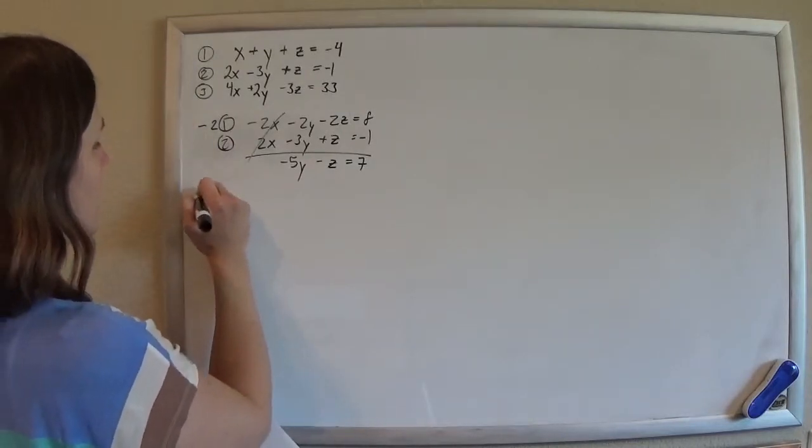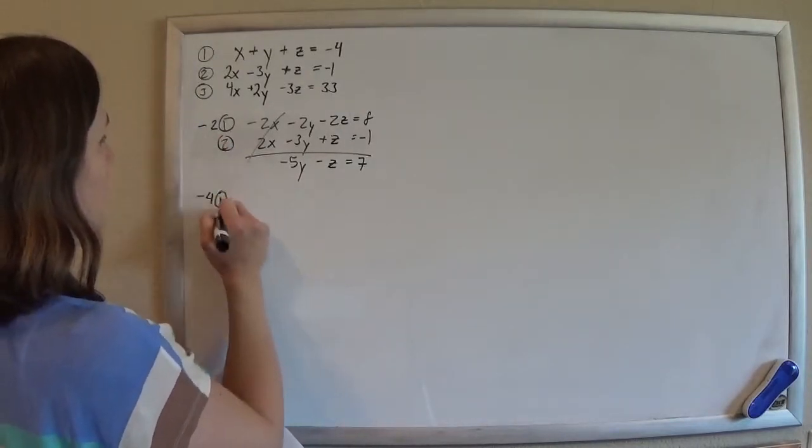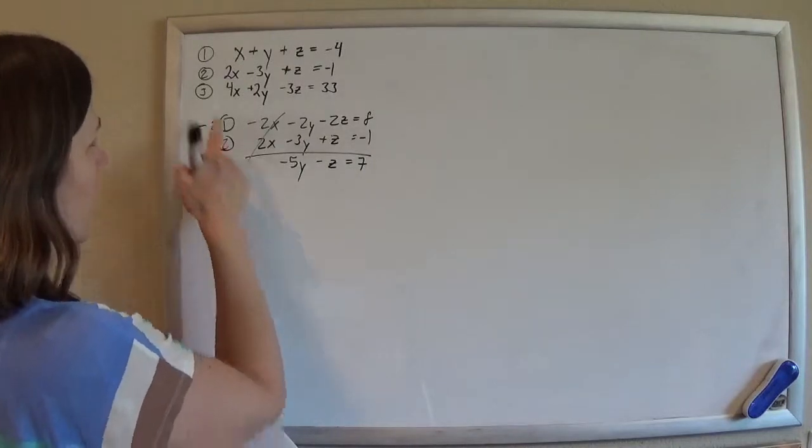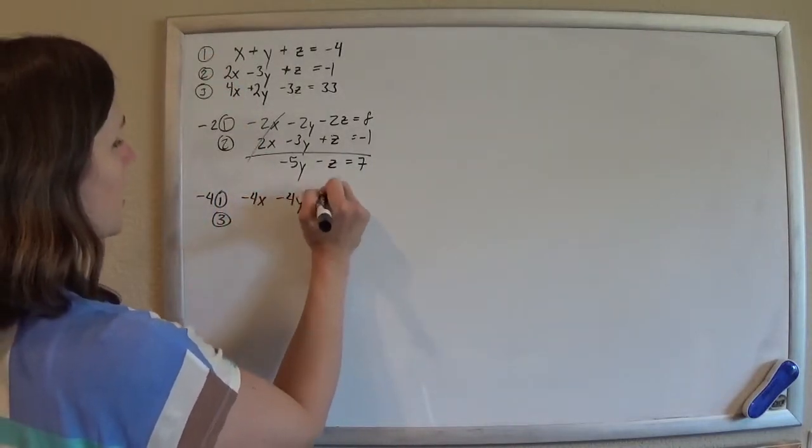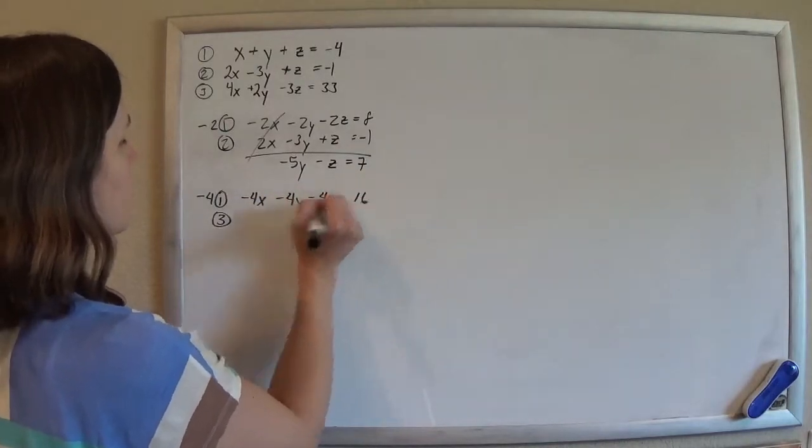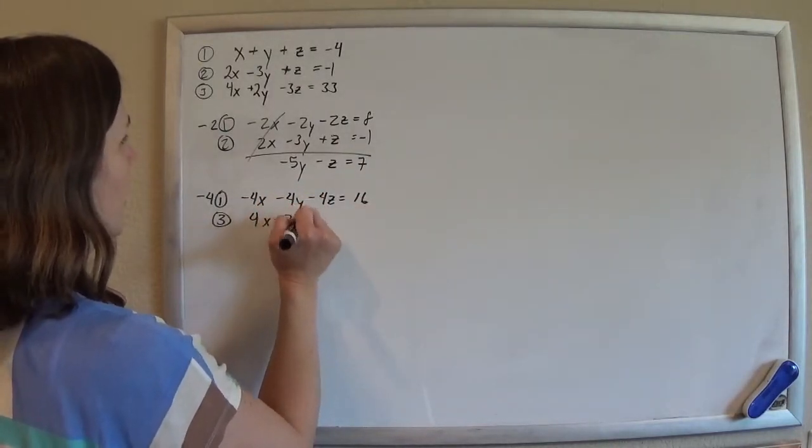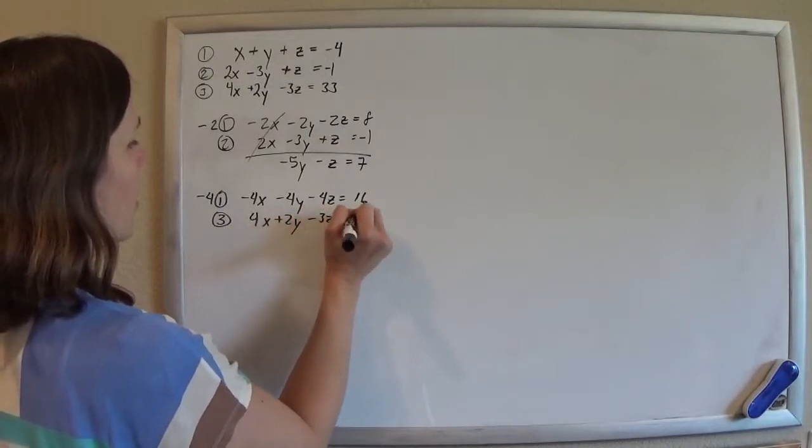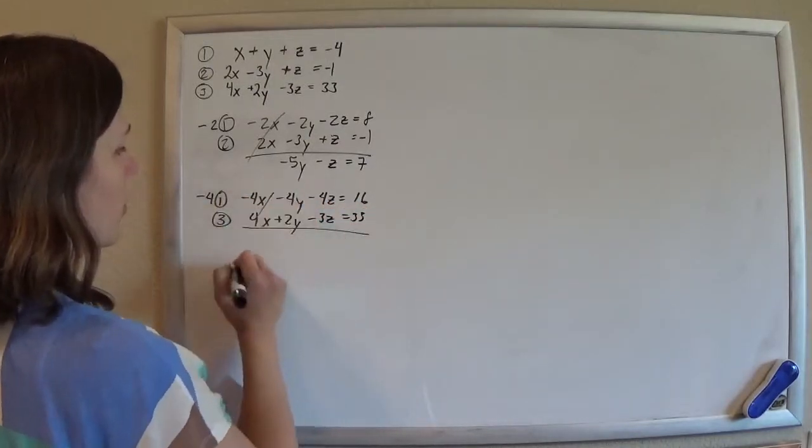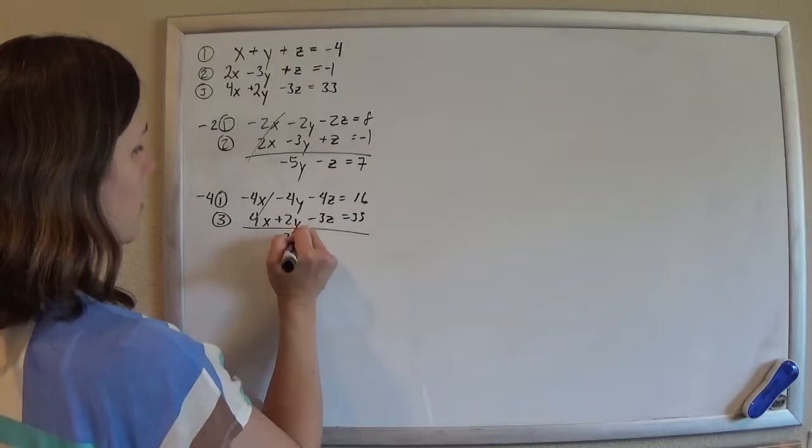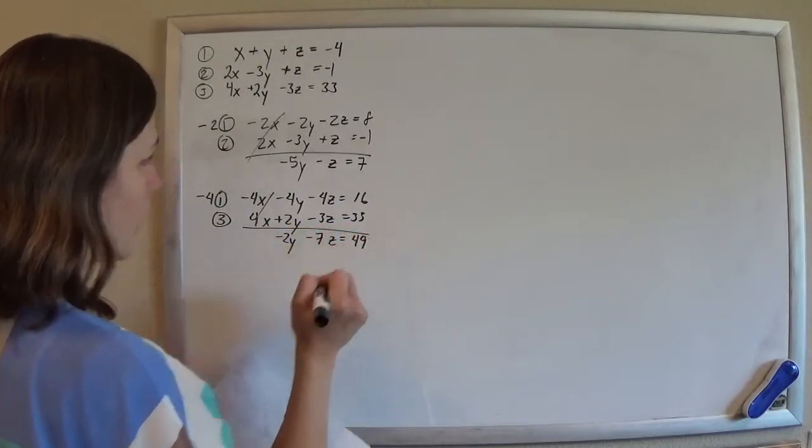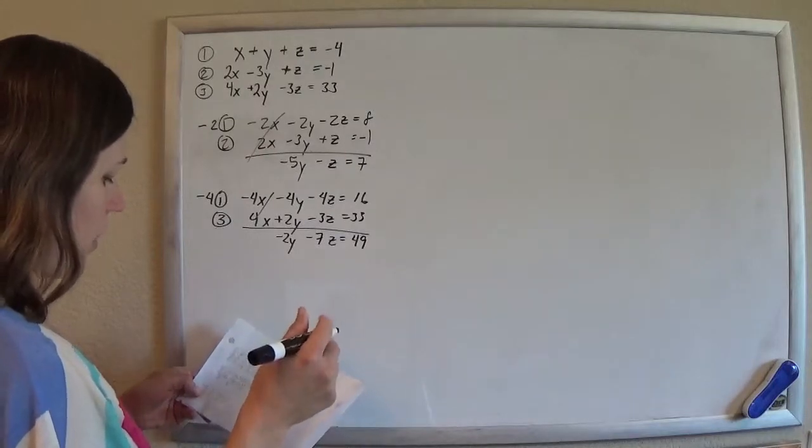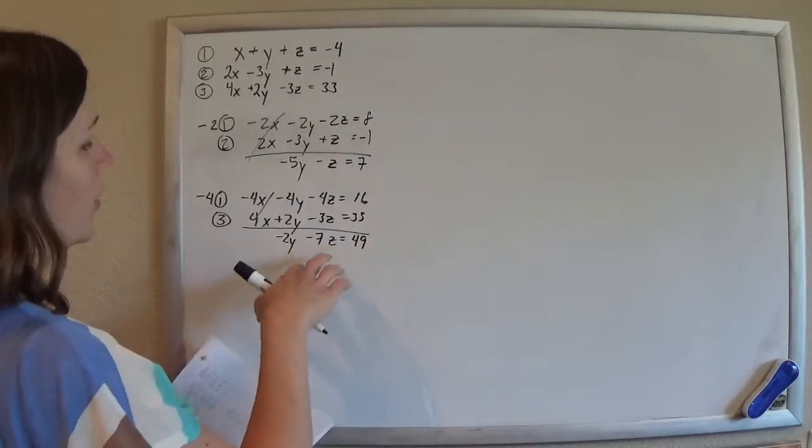So I'm going to do negative 4 times row 1, add it to row 3. And so then I'll have negative 4x minus 4y minus 4z equals 16. Keep row 3 the same. And those go away. Minus 2y minus 7z equals 49. So minus 2y minus 7z equals 49.